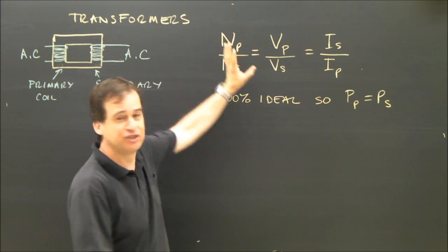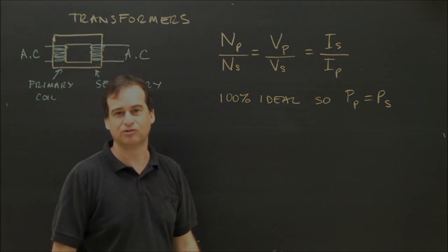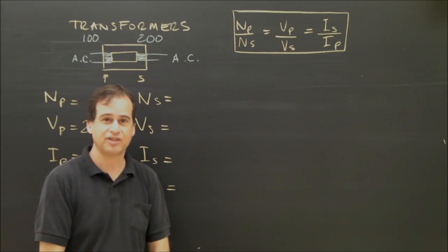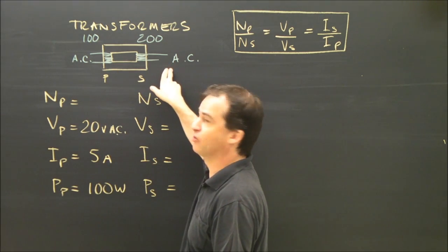So what we should do now is maybe try a sample problem. So I'm going to erase this and we'll try another problem. Here's our sample problem. We've got a transformer. Transformers change alternating current to alternating current.